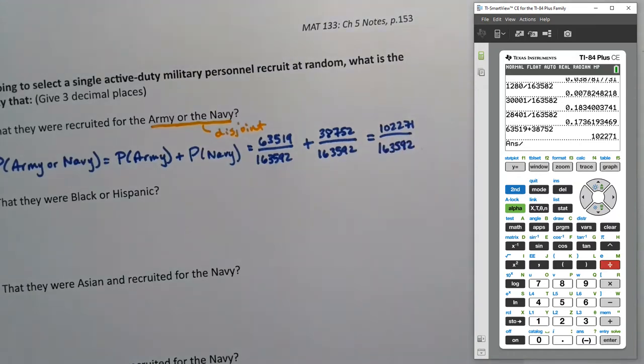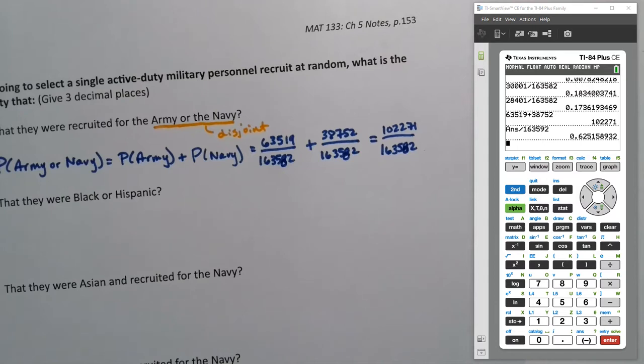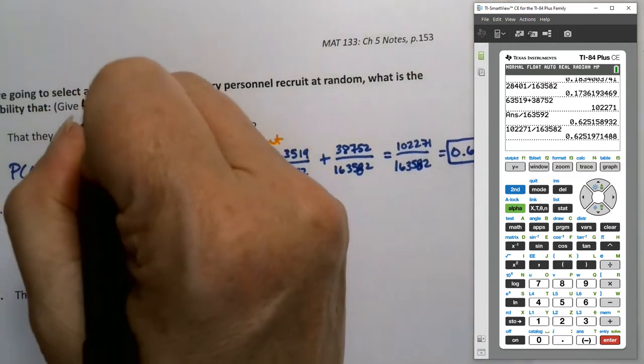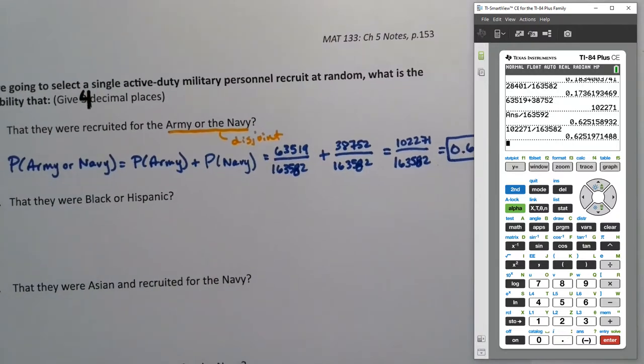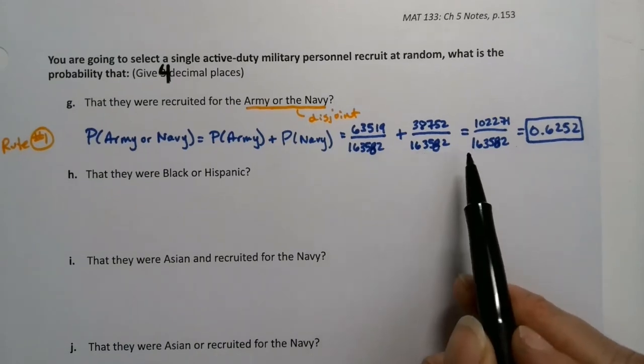And since they have the same denominator, I just have to add the two numerators together and I'm golden. So let me see here. 63,519 plus 38,752 gets me 102,271. Now if I just hit division, it'll take that last answer, which was 102,271. There it is. And I divide by 163,582. Well, how am I going to fix that? Well, I can just type it. 102,000 over here. 271 divided by 163,582. My mistake. So it's 0.6252 if we go to four decimal places. I think I'm going to be sticking with this four decimal places thing. So I might as well get used to it.